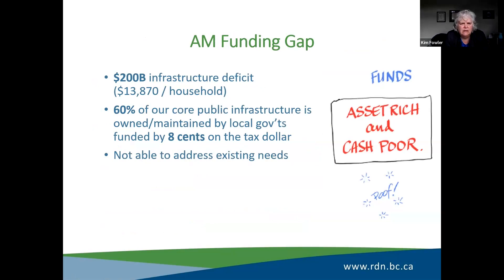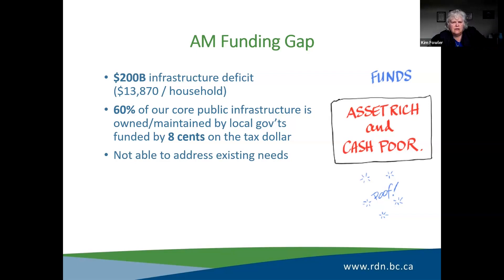The $200 billion infrastructure gap is about $14,000 per household across Canada — and that's about eight or nine years old, so it's probably closer to $400 billion now. As local governments, we own 60% of the core public infrastructure on $0.08 on the tax dollar. The province gets $0.42 and the feds get $0.50. That's not fair, and it means we're not able to address existing needs, let alone future ones. We call it a funding gap, not a deficit, because that has a specific accounting definition.